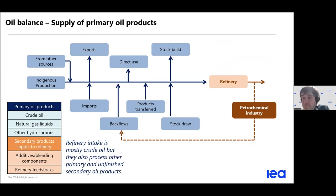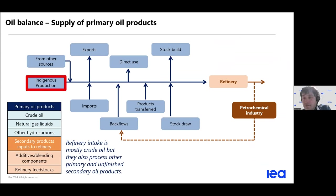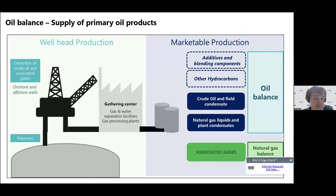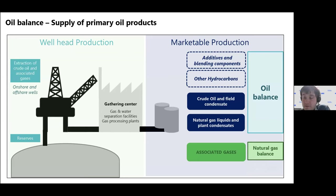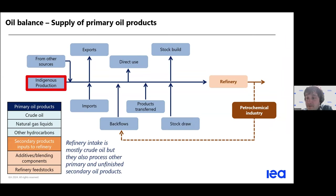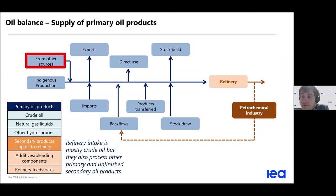Now that we've talked about the main concepts regarding oil itself, let's look at the first stage of supply — supply of primary products. Of course, the first step at the country level is production of crude oil, if the country produces oil. Natural gas liquid condensates are included in our oil statistics, but other associated gases are not covered by oil data — they are covered by the gas data.